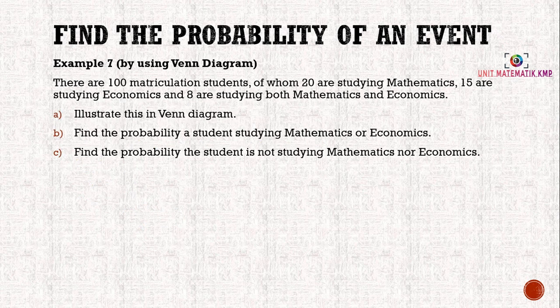Example seven: by using a Venn diagram. There are 100 matriculation students, of whom 20 are studying mathematics, 15 are studying economics, and 8 are studying both mathematics and economics. Firstly, you need to illustrate this in a Venn diagram.